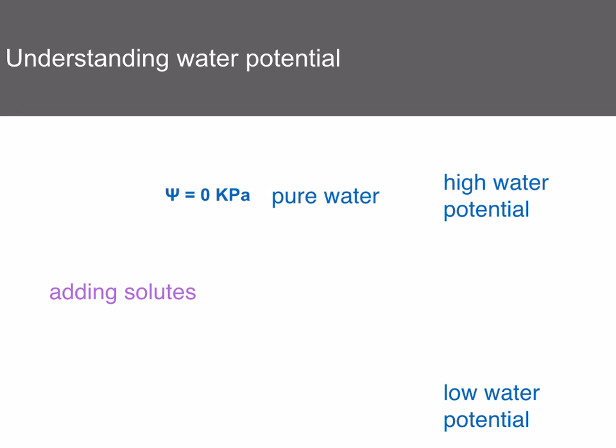Understanding water potential can be confusing since the highest value is zero and all other values are negative. The more negative the value, the more solute there is. Think of water potential like a bank overdraft — the bigger the overdraft, the more negative the amount. A high water potential is zero kilopascals, and a low water potential is a very negative value, for example minus 200 kilopascals.